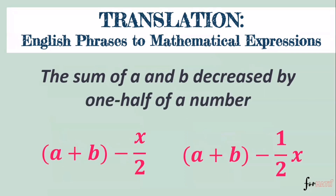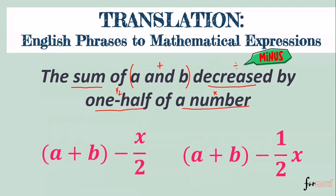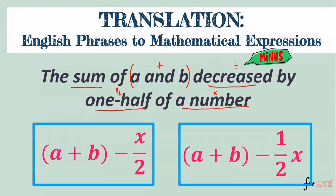Next: 'The sum of A and B decreased by one half of a number.' The sum of A and B is (A + B). Decreased by means minus. One half of a number is one-half x. So the answer is (A + B) minus one-half x. Both forms of writing this are correct — you can write it as (A + B) − (1/2)x.